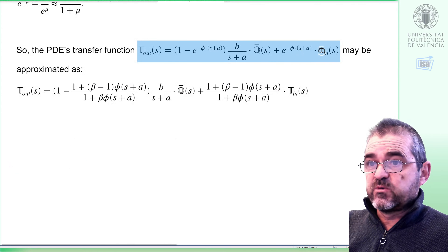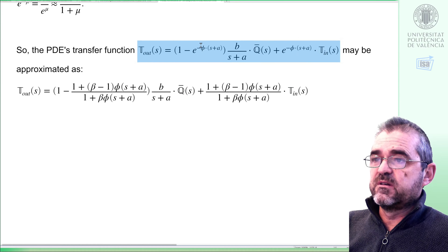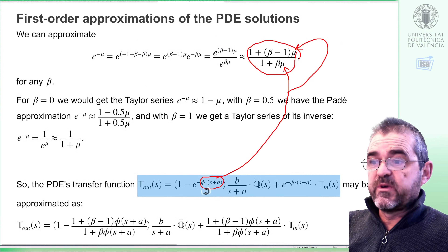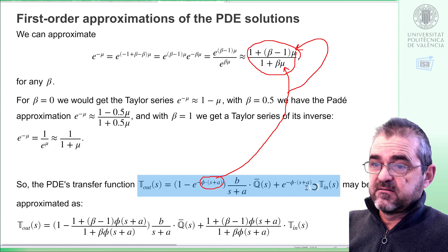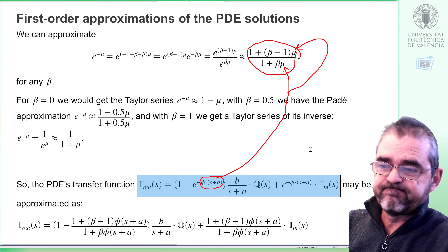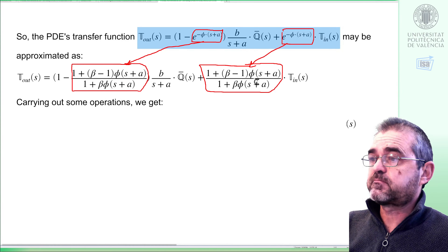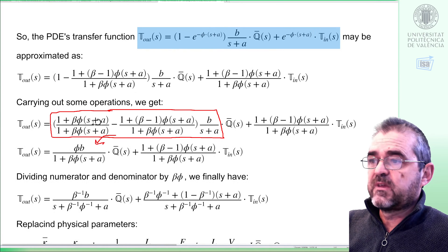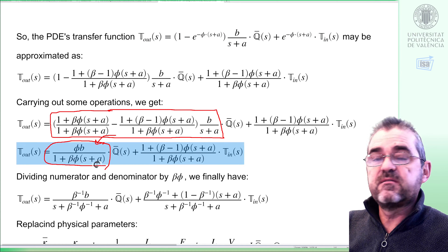Since this was the transfer function from the PDE solution, we understand mu as the term inside the exponentials. We plug phi times (s + a) into the formula, and obtain a family of approximations depending on the value of beta. This exponential gets converted, and similarly for the others. Writing 1 accordingly and carrying out the algebra, I get this expression for the heat transfer function.